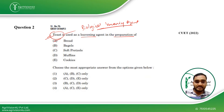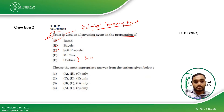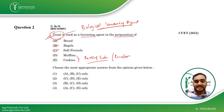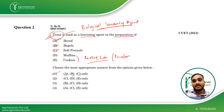Breads, bagels, and soft pretzels are all leavened by yeast. However, muffins and cookies are leavened by baking soda or baking powder — depending on the type of recipe, whether it contains cocoa or not, you will use baking soda or baking powder. So yeast is used in the leavening of bread, bagels, and soft pretzels, making A, B, and C the right option. This question was also asked in CUET 2022.